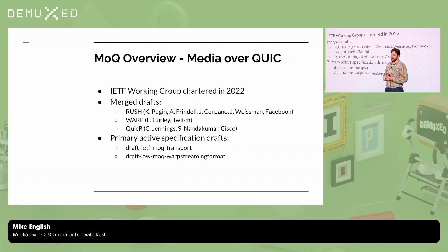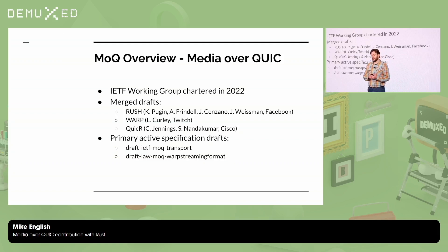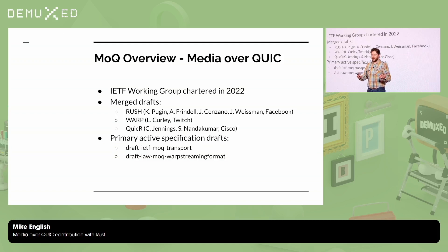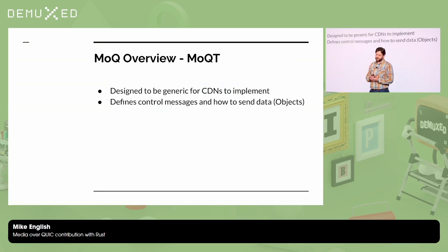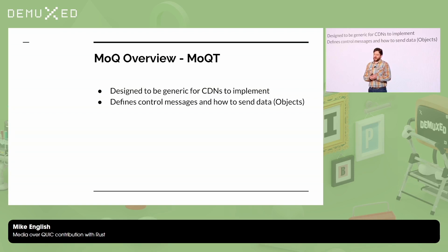Media over QUIC is a working group formed in 2022 to build on top of the QUIC protocol and take advantage of these features for media delivery and contribution. It merged together several drafts: Rush from Facebook/Meta, Warp from Twitch, and Quicker from Cisco. We now have two main base specs: the MoQ transport spec, and a streaming format spec that Will Law is working on. MoQ transport defines control messages and how to send objects — it's the base layer, designed to be generic, like what CDNs implement.